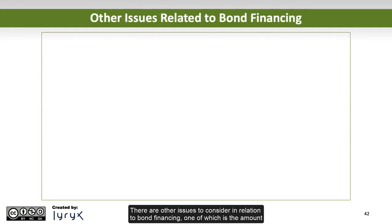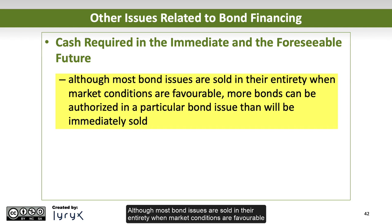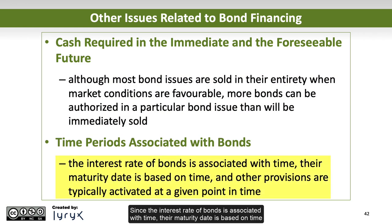There are other issues to consider in relation to bond financing, one of which is the amount of cash required in the immediate and foreseeable future. Although most bond issues are sold in their entirety when market conditions are favorable, more bonds can be authorized in a particular bond issue than will be immediately sold. Another consideration is the time period associated with bonds. Since the interest rate of bonds is associated with time, their maturity date is based on time, and other provisions are typically activated at a given point in time.